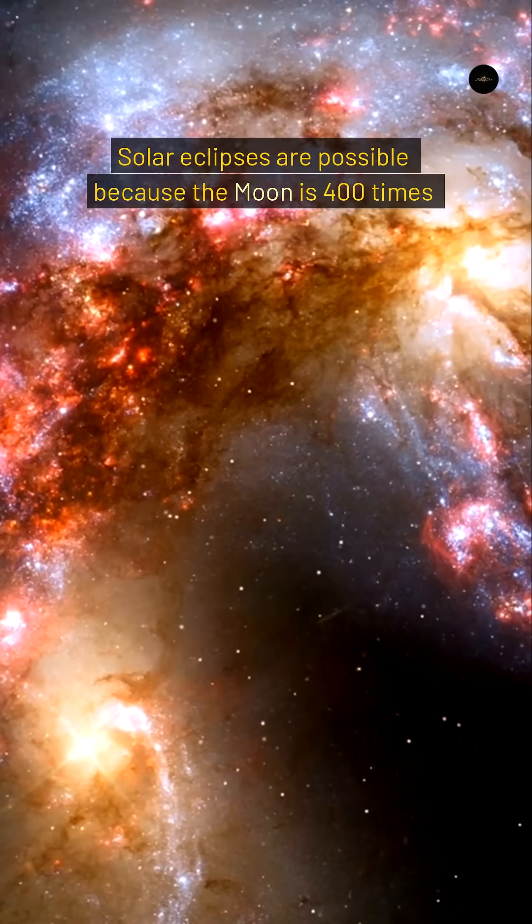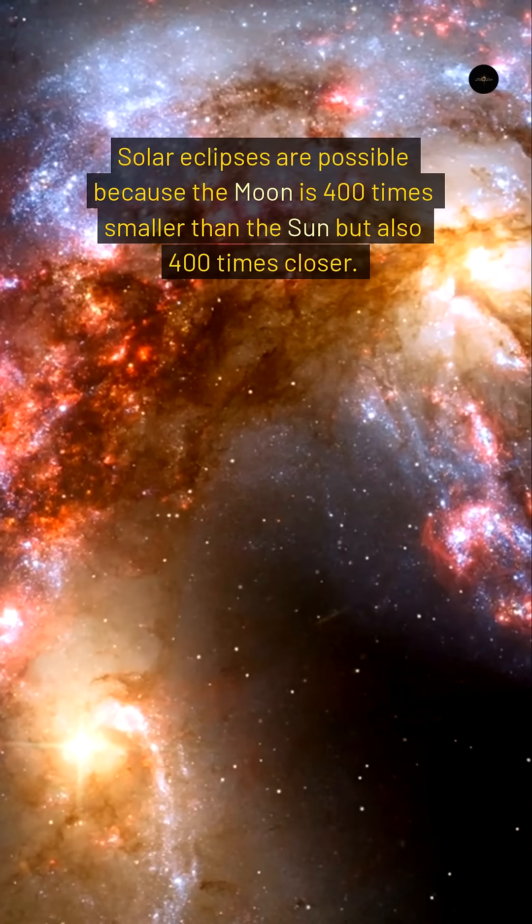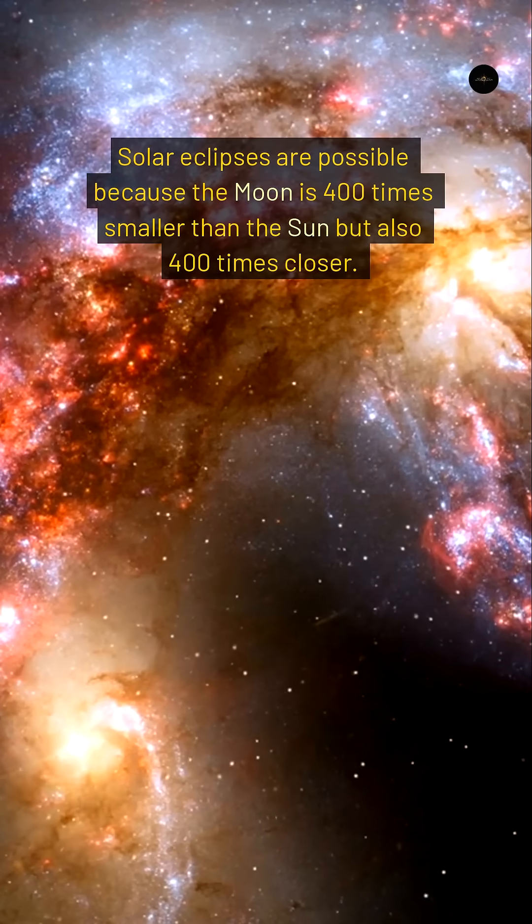Solar eclipses are possible because the Moon is 400 times smaller than the Sun but also 400 times closer.